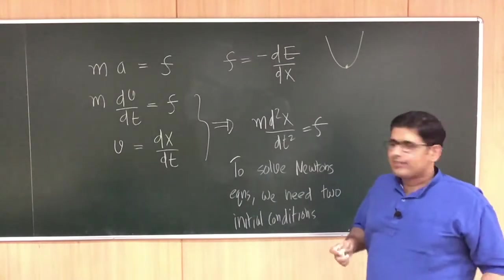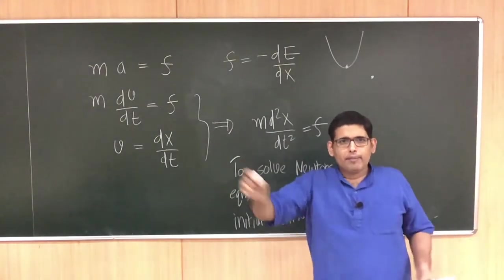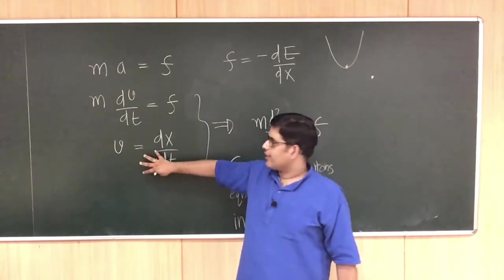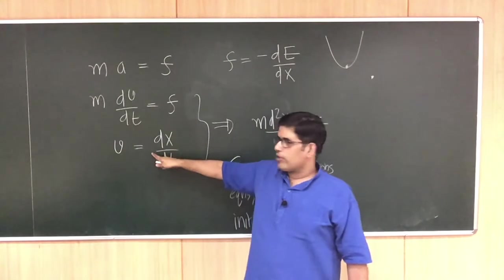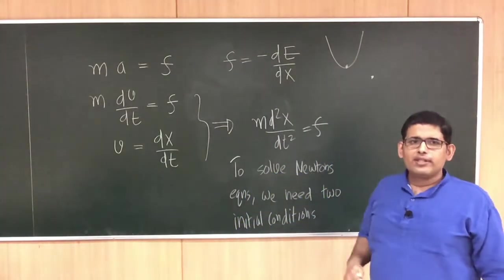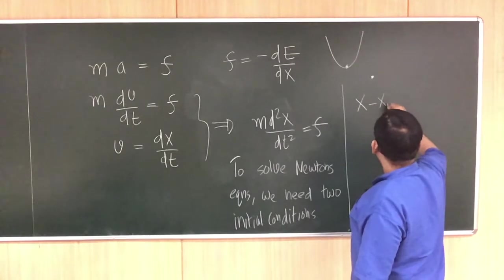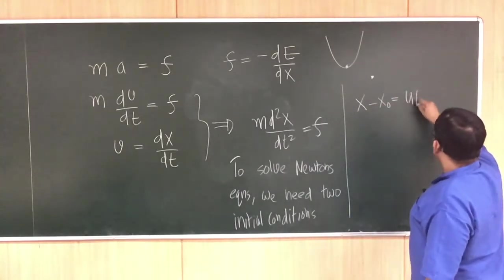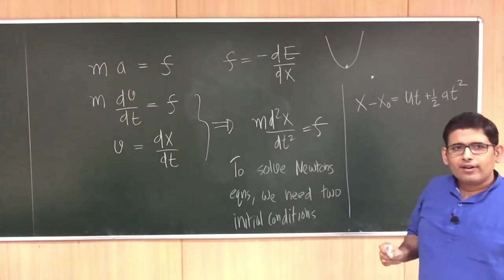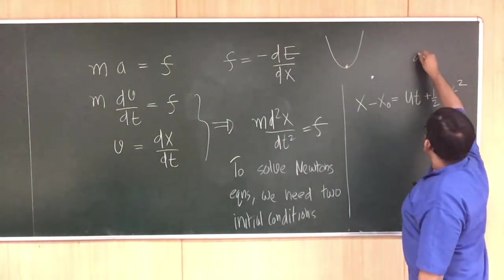What does that mean? It means that if you want to predict, if you have a particle or any molecule, and you want to predict its dynamics, its future as a function of time, you need to know two things: an initial velocity and an initial position. When you learned Newton's equation in class 12, you already got formulas like x minus x₀ equals something — a solution of Newton's equation for a particle under a constant force. If acceleration or force is given to you, acceleration is f/m.